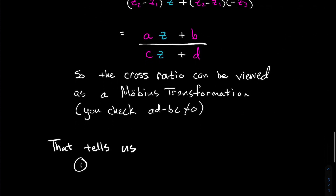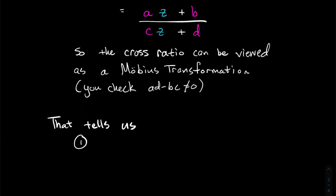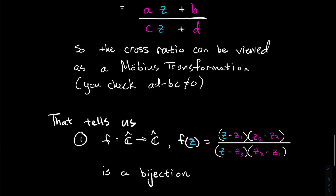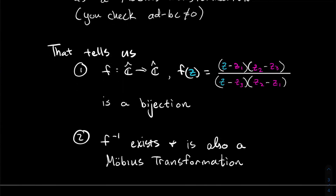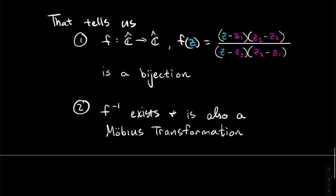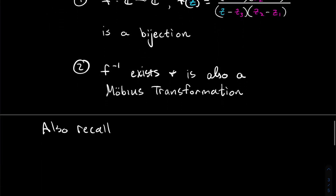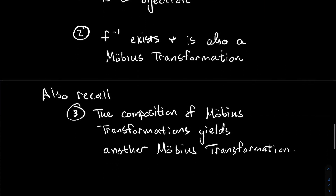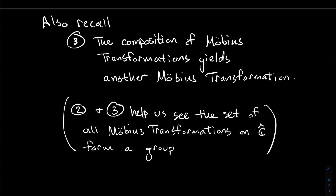So when we think of the cross ratio as a function, it's a Möbius transformation — a bijection from the extended complex plane to itself. It therefore has an inverse, and the inverse of a Möbius transformation is again a Möbius transformation. Also, the composition of Möbius transformations is again a Möbius transformation. Together, those facts get you on the way to seeing that the set of Möbius transformations forms a group — a cool overlap between abstract algebra and complex analysis.